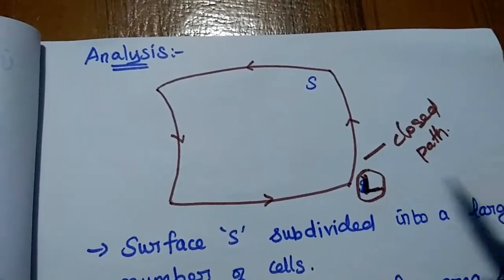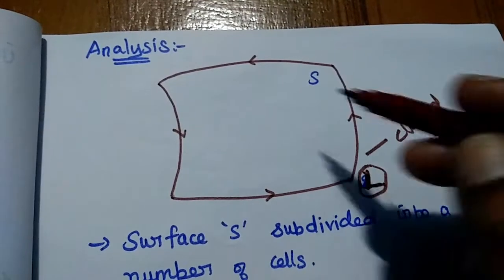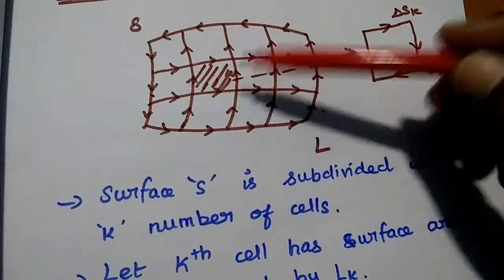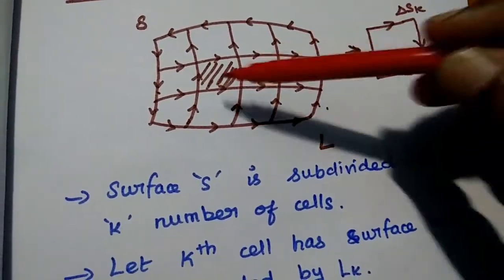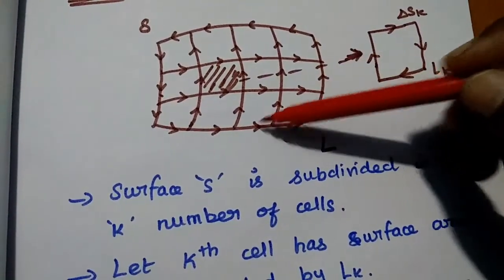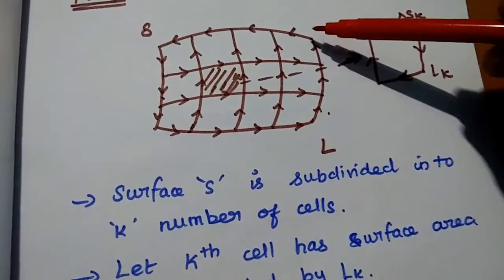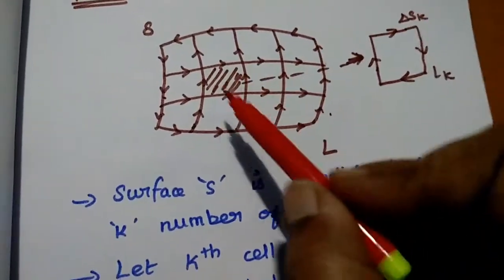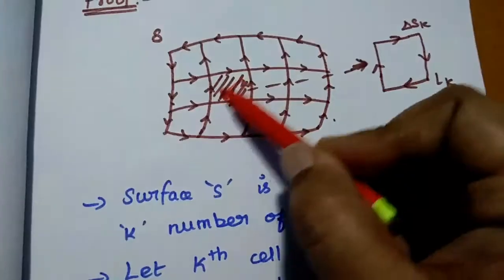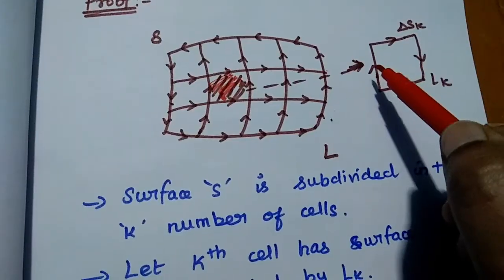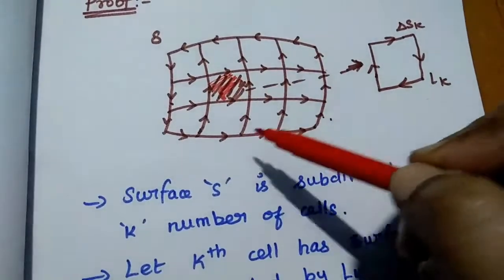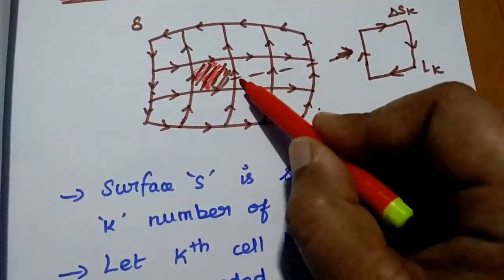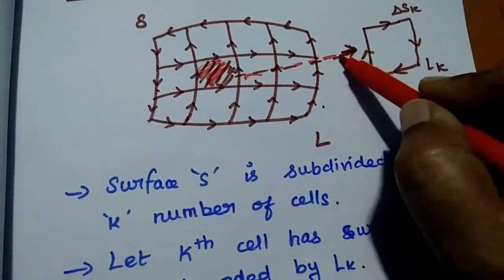Now we are going to subdivide this surface into different cells. We have subdivided the surface S into K number of cells — a large number of cells. The arrow marks define the flow of charges, indicating the direction in which they are flowing.